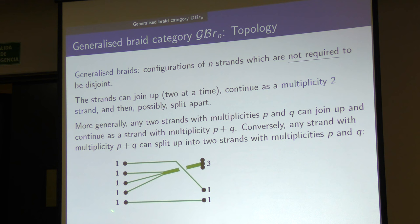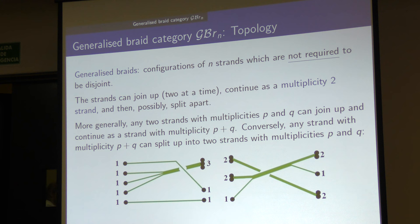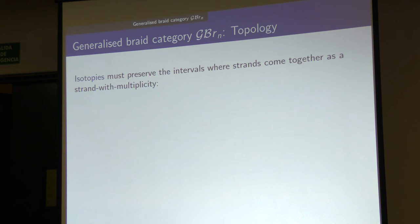Here are some generalized braids. We start with a classical configuration of disjoined strands. We must always specify the order in which strands come together. For example, first these two strands come together, and then this one joins. A more interesting example: you can start as a multiple strand and go throughout the whole braid while still being a multiplicity-two strand. Here we have a multiplicity-two and multiplicity-one strand joining together, continuing and splitting apart. The question is, what isotopies do we allow? They must preserve the intervals where strands come together, they must preserve the number of intervals, and they must preserve the order in which strings join in an interval.